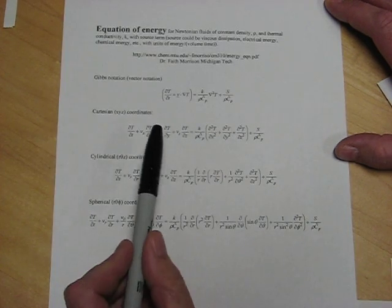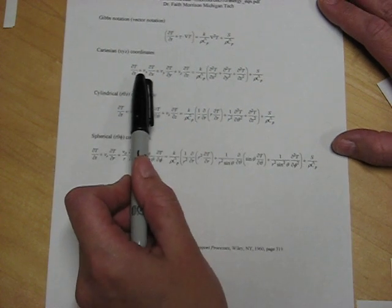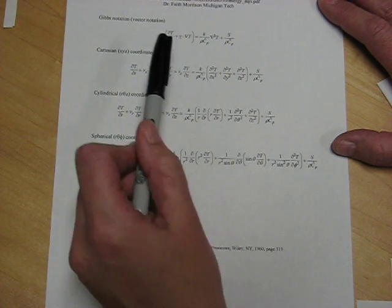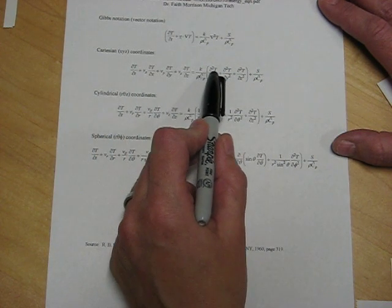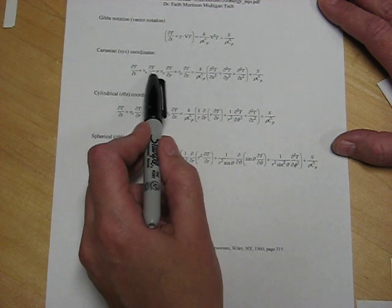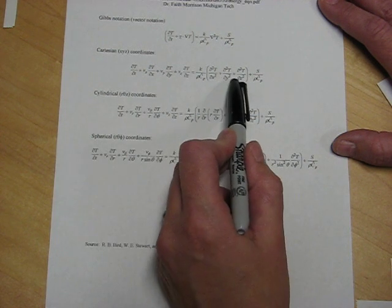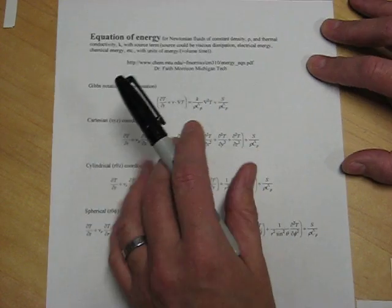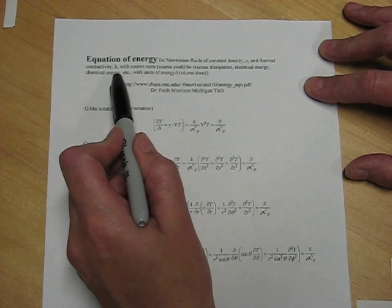And in this handout, the energy equation is given here in Gibbs notation. And in addition, it's given in Cartesian, cylindrical, and spherical coordinates. The energy equation gives the relationship between the temperature profile, which is what we're looking for, and the various factors that affect the temperature profile, such as the velocity distribution within the material, time, the spatial distribution of temperature within the material, and any sources in the material, where the sources are viscous dissipation, electrical energy, and chemical reaction.